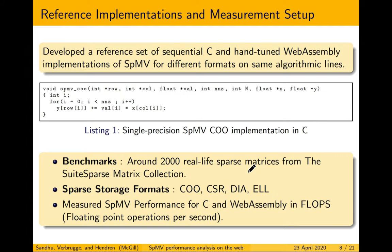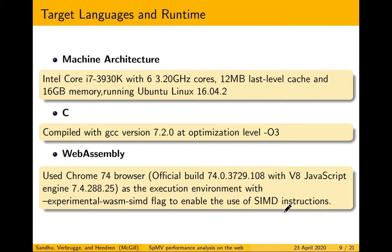Let's look at our experimental design. We developed a reference set of sequential C and hand-tuned WebAssembly implementations of SpMV for different formats on the same algorithmic lines. For our benchmarks we have around 2,000 real-life sparse matrices from the SuiteSparse matrix collection, using four sparse storage formats. We measure SpMV performance in floating-point operations per second. Our machine architecture is Intel Core i7, C implementations compiled with GCC at optimization level O3, and we used Chrome 74 for WebAssembly with experimental SIMD instructions enabled.